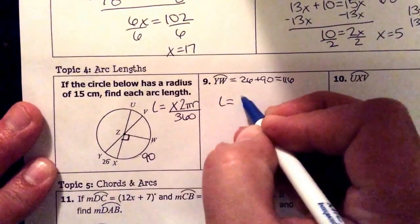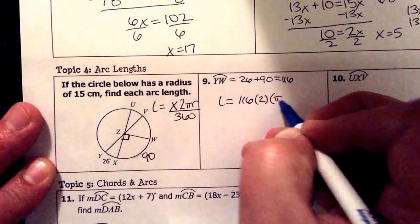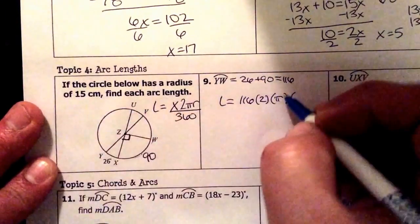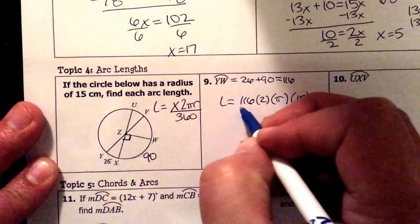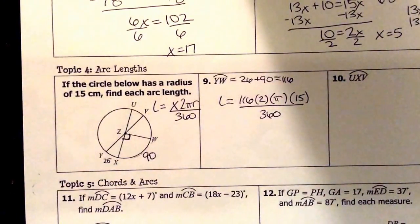So length is 116 times 2 times π times my radius. It tells us over here the radius is 15 and we're going to divide that all by 360. So let's go ahead and type that in the calculator.